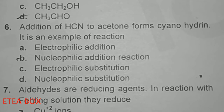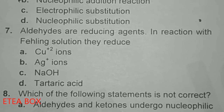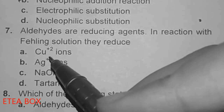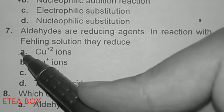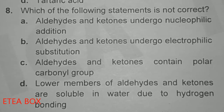Aldehydes are reducing agents in the reaction with Fehling's solution; they reduce the Cu²⁺ ion by donating electrons to the copper ion.